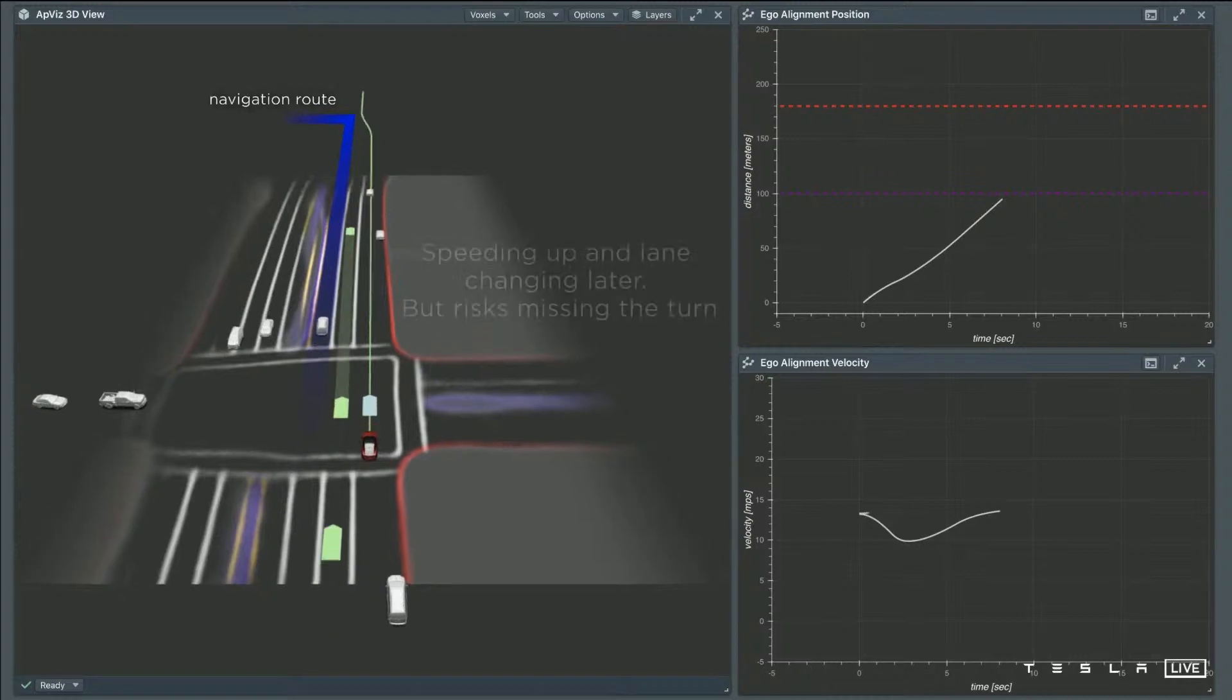The next maneuver it tries does the lane change a bit late, so it speeds up, goes behind the other car, goes in front of the other cars, and finally does the lane change, but now it risks missing the left turn.